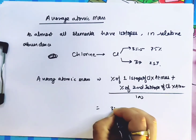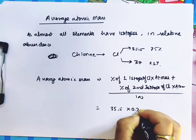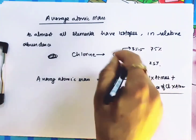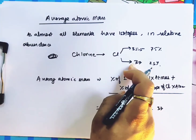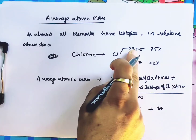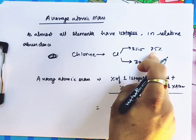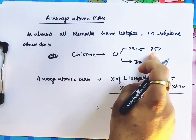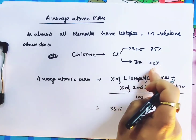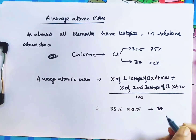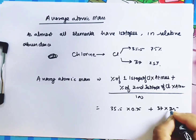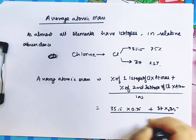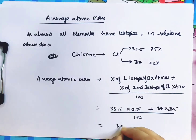I will show you this. With approximate calculations: 35.5 and 2.75 — 37 is not exact, 36.98; 35.47 is also not exact. When you solve it, you get very close to 35.5.